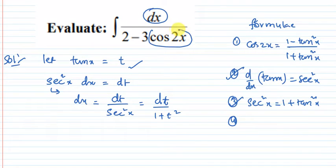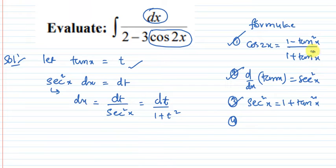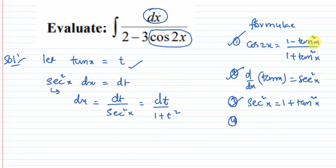Next, the cos 2x value: the first formula gives cos 2x equals 1 minus tan squared x divided by 1 plus tan squared x. Since tan x equals t, cos 2x equals 1 minus t squared divided by 1 plus t squared.